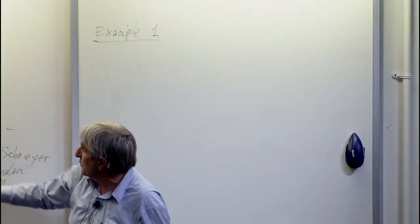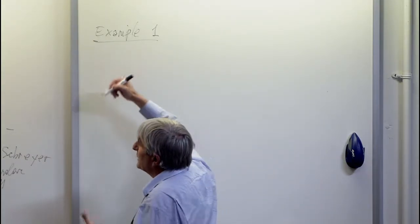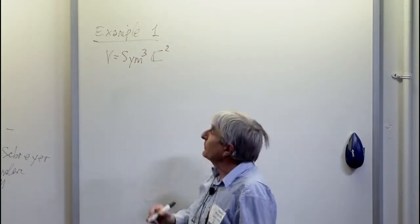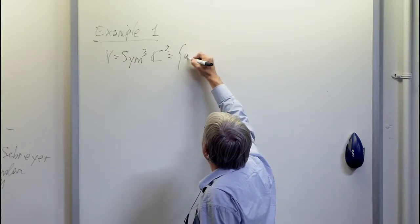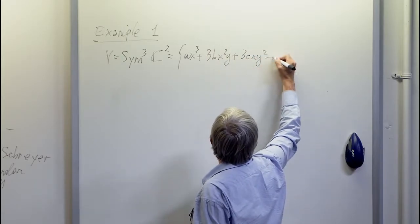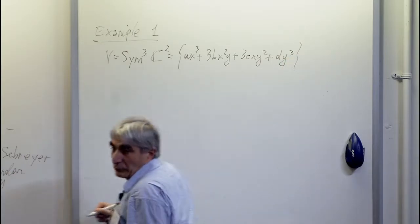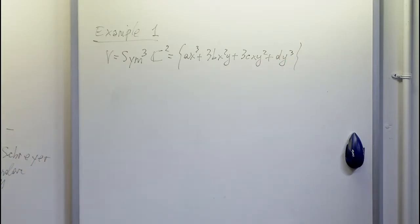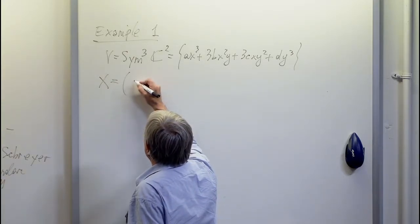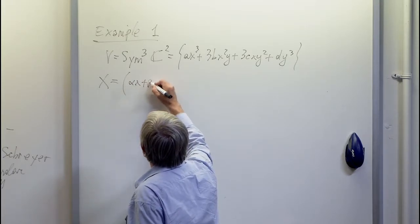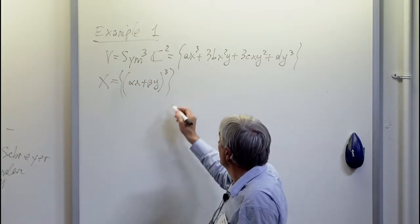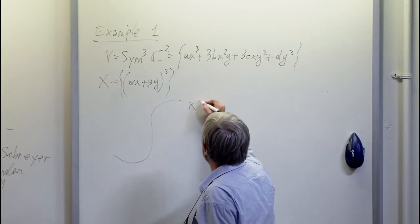Let's take a small step in degree. Consider Sym³(C²), which is Ax³ + 3bx²y + 3cxy² + dy³ — the so-called binary cubics. X is given by the cubes: the particular polynomials which are a cube of a linear form. If you draw, X is the so-called twisted cubic — usually Example 1 in any course in algebraic geometry.